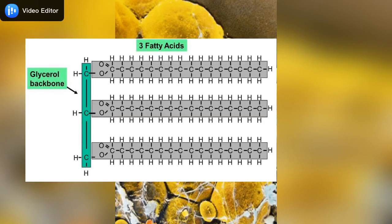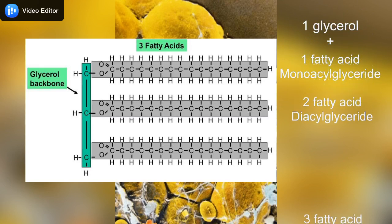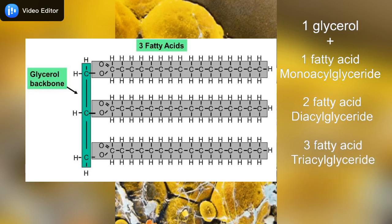When lipids have one glycerol and one fatty acid chain, they are called monoacylglycerides. When they have two fatty acid chains, they are called diacylglycerides and three fatty acid chains are called triacylglycerides.